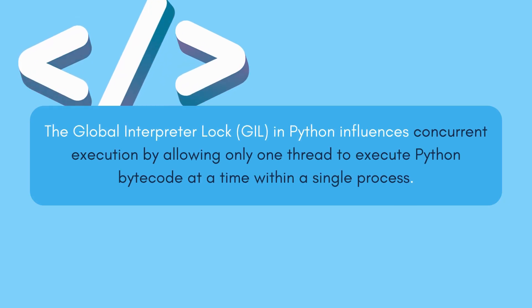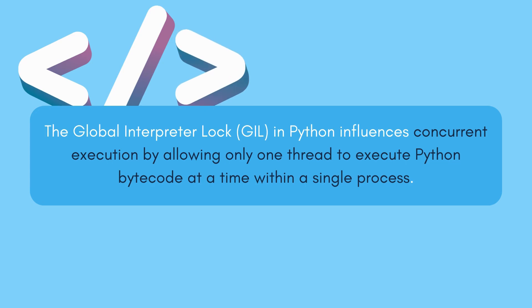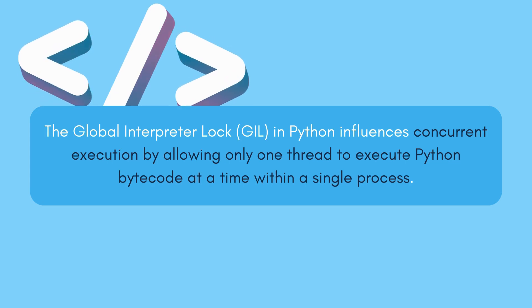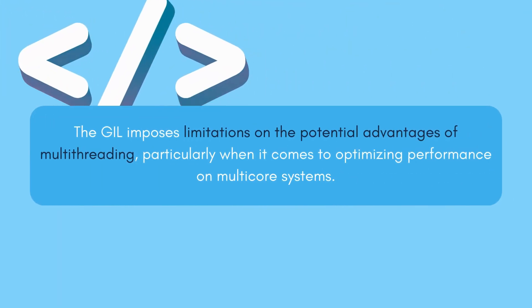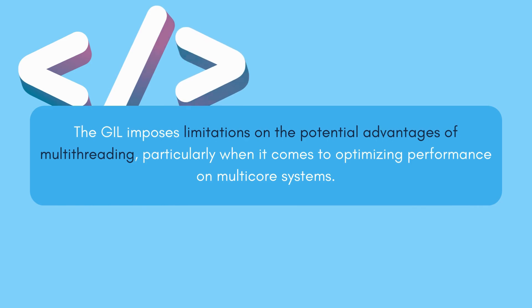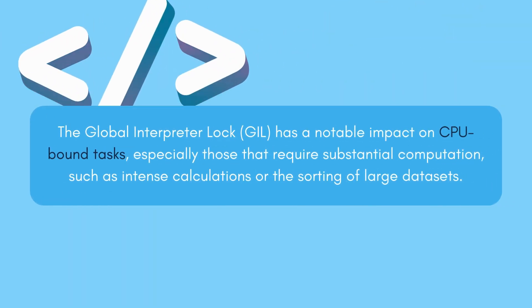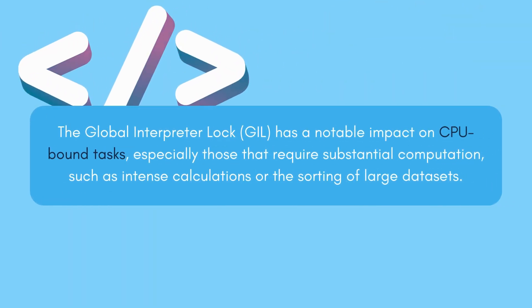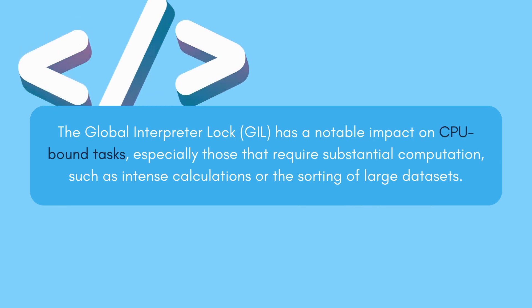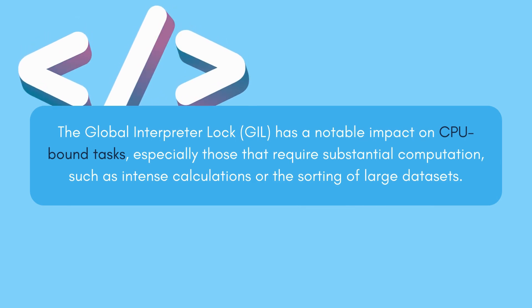What effect does the GIL have? The GIL in Python affects the concurrent execution of threads within a single process, limiting the potential benefits of multi-threading on multi-core systems, and particularly impacting CPU-bound tasks that involve heavy computation, such as intense calculations or sorting a large amount of data.